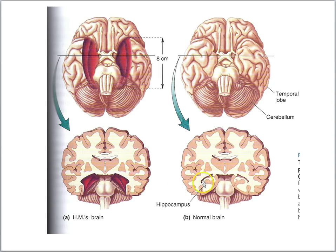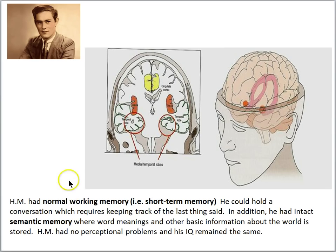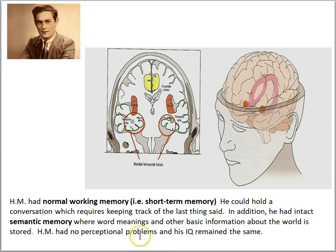So it was a fairly radical operation — a lot of brain tissue was removed. Interestingly, after the surgery HM had normal working memory and normal short-term memory; he could hold a conversation, which requires keeping track of the last thing said. In addition, he had intact semantic memory, where word meanings and other basic information about the world are stored. HM had no perceptual problems and his IQ remained the same.